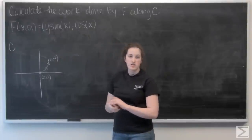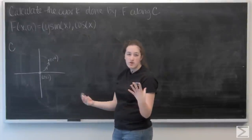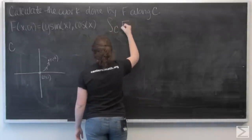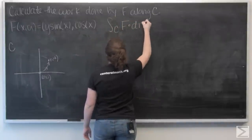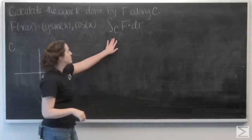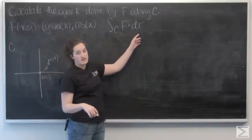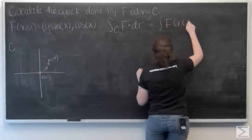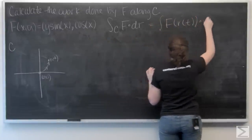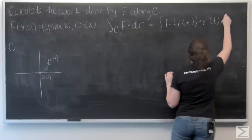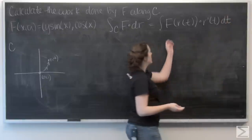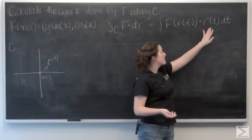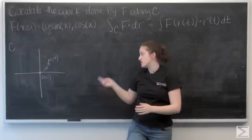To calculate this line integral, I need the general form of a line integral, which is just the integral along the curve c of f dot dr, which is the integral of f of r(t) dotted with r prime of t dt, where r(t) is the parametrization of this curve.